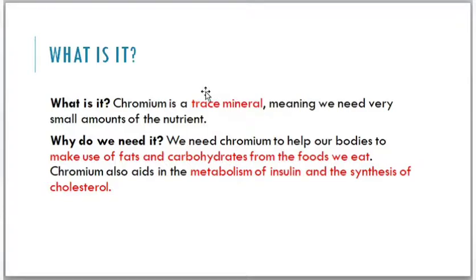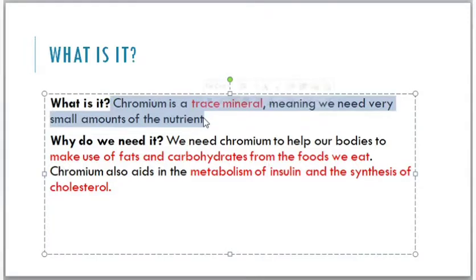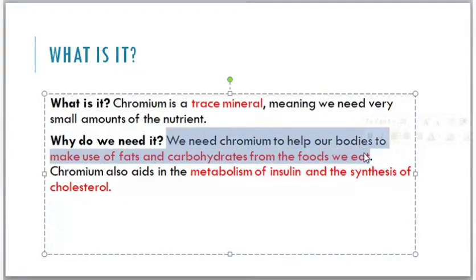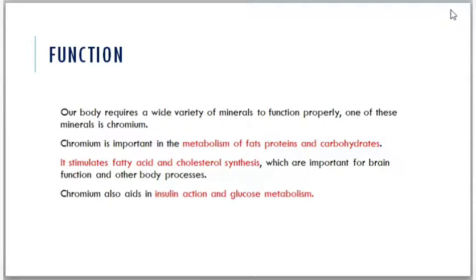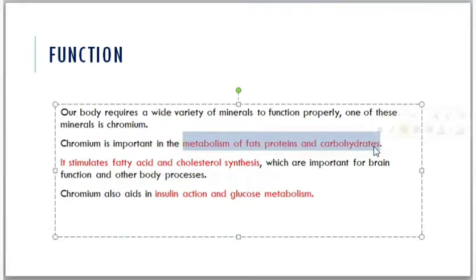Chromium is a trace mineral, meaning we need very small amounts. We need chromium to help our bodies make use of fats and carbohydrates from food. Chromium also aids in the metabolism of insulin and the synthesis of cholesterol. It is important in the metabolism of fats, proteins, and carbohydrates, stimulates fatty acid and cholesterol synthesis important for brain function, and aids in insulin action and glucose metabolism.